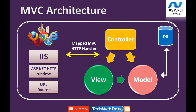Let's discuss the architecture. When a request is issued from the browser, it goes first to IIS where the application is hosted, then to the ASP.NET HTTP runtime, which goes to the URL router. The request is then mapped to the MVC HTTP handler and goes to the Controller. The controller receives the request, checks the URI (Uniform Resource Identifier), and determines what model to call and what view to present.